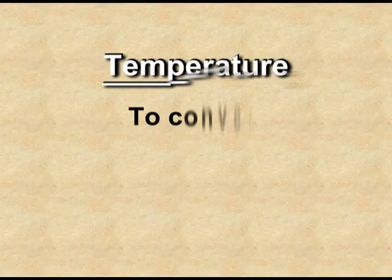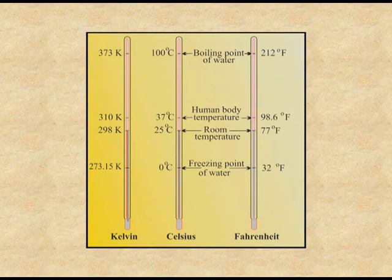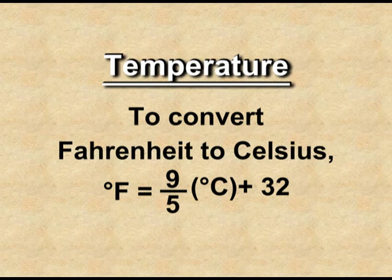Temperature is the degree of hotness or coldness of a body. We use three fundamental scales to measure temperature: degree Celsius, degree Fahrenheit, and Kelvin. All three scales are interconvertible. We can convert degree Celsius into Kelvin by adding 273.15. For example, 0°C equals 273.15 K, and 100°C equals 373.15 K. Degree Fahrenheit can be converted into degree Celsius using the formula: °F = (9/5 × °C) + 32.